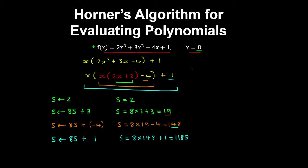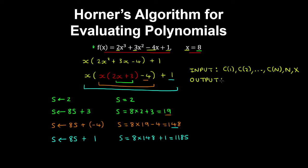Now we'll write our pseudocode. The inputs are the coefficients of the polynomial — c1, c2, up to cm. In this case, our coefficients are 2, 3, minus 4, and 1. We also have the number of coefficients in the array and our value for x. The output is s, which is the result of the evaluated polynomial.